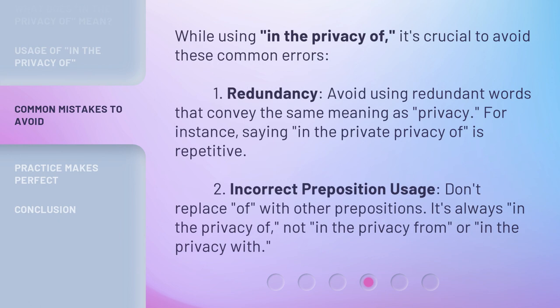While using 'in the privacy of,' it's crucial to avoid these common errors. One: redundancy — avoid using redundant words that convey the same meaning as privacy. For instance, saying 'in the private privacy of' is repetitive. Two: incorrect preposition usage — don't replace 'of' with other prepositions. It's always 'in the privacy of,' not 'in the privacy from' or 'in the privacy with.'